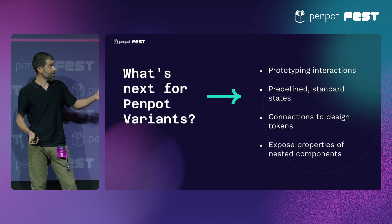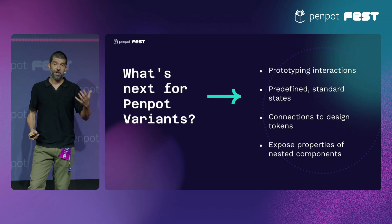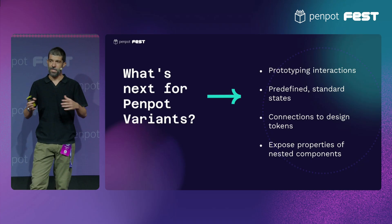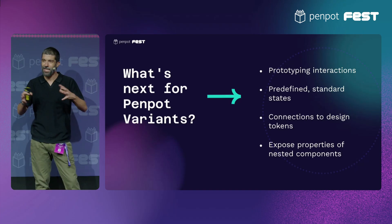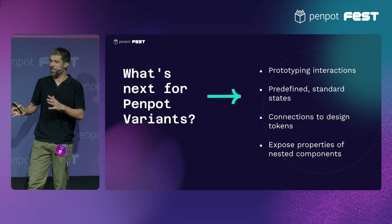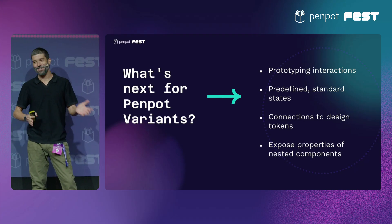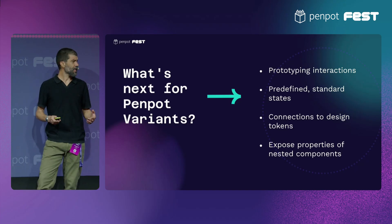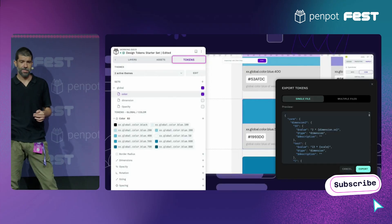We are working on prototyping through variants, but we have more plans to improve the feature — like offering predefined states, like the ones that you can actually find in websites and applications typically, so you don't have to design all of them to use the variants. We are also exploring things like direct connections between design tokens and variants. This is actually a discussion we have internally, because we have people that really don't think it's a good idea, and other people that think it is part of the process. And we have more plans, like propagating the properties of the variants from the parent components to the nested ones.